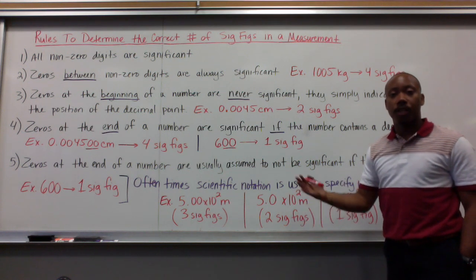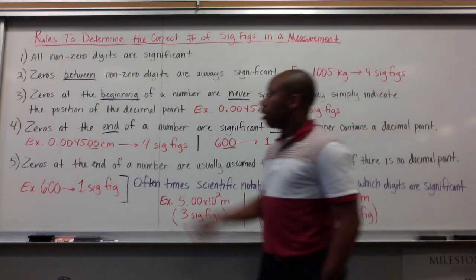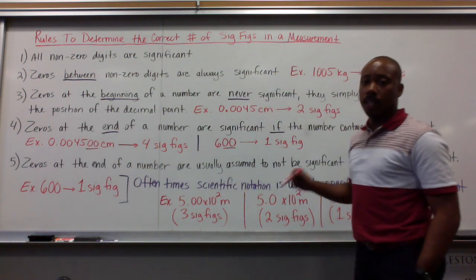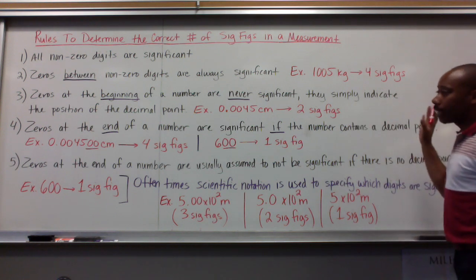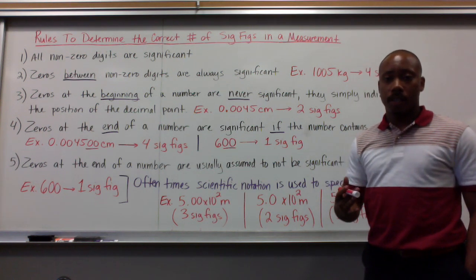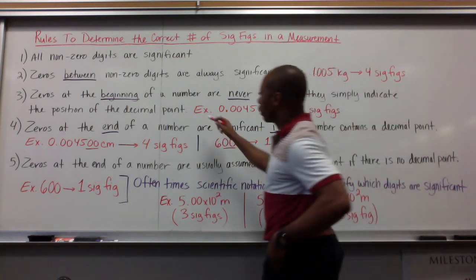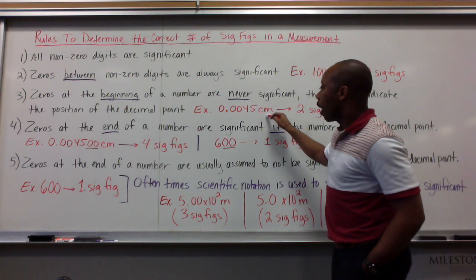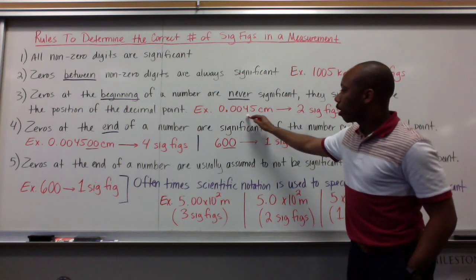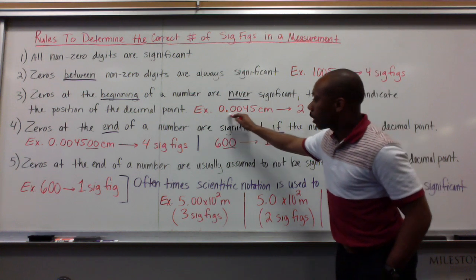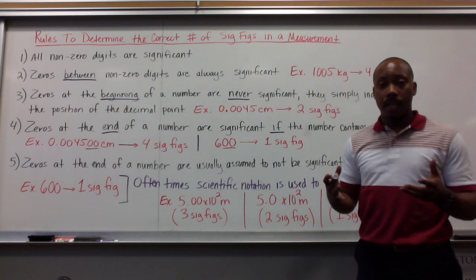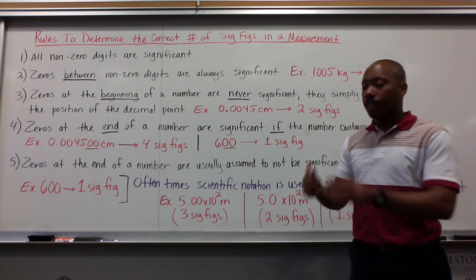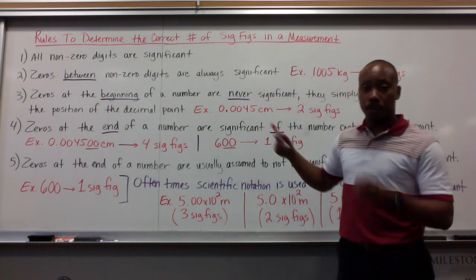Rule number three: zeros at the beginning of a number are never significant — they simply indicate the position of the decimal point, they're like placeholders. For example, 0.0045 centimeters has only two significant figures: the 4 and the 5. These zeros that start the number are not significant because they're simply placeholders telling me that I have a really small number, yet they do not indicate the precision of this value.